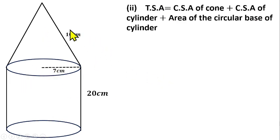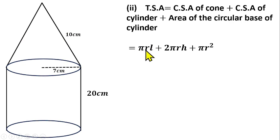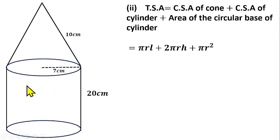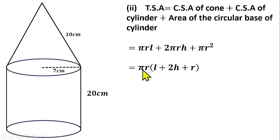The formula for the curved surface area of the cone is πrl. The curved surface area of the cylinder is 2πrH. The area of the circular base is πr². Since πr is common to all three terms, we can factorize: πr(l + 2H + r). Note that H here is the height of the cylinder, not the cone.